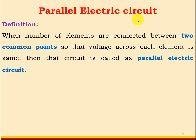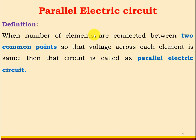What is a parallel electric circuit? The definition: when a number of elements are connected between two common points so that the voltage across each element is the same, then that circuit is called a parallel electric circuit. The main requirement is that all the elements should be connected between two common points.